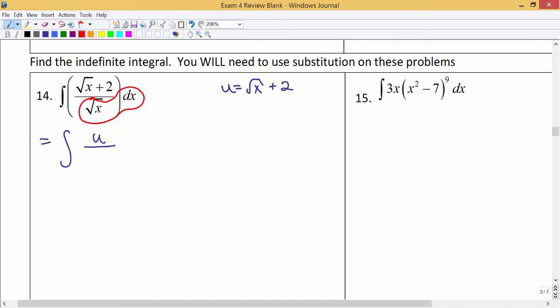Let's rewrite u: that's x to the 1/2 power plus 2. So when we find du, the derivative of u would be 1/2 x, and then reduce the power by 1, so raise to the negative 1/2 power. Of course, the derivative of 2 would be 0, so then we have our dx.